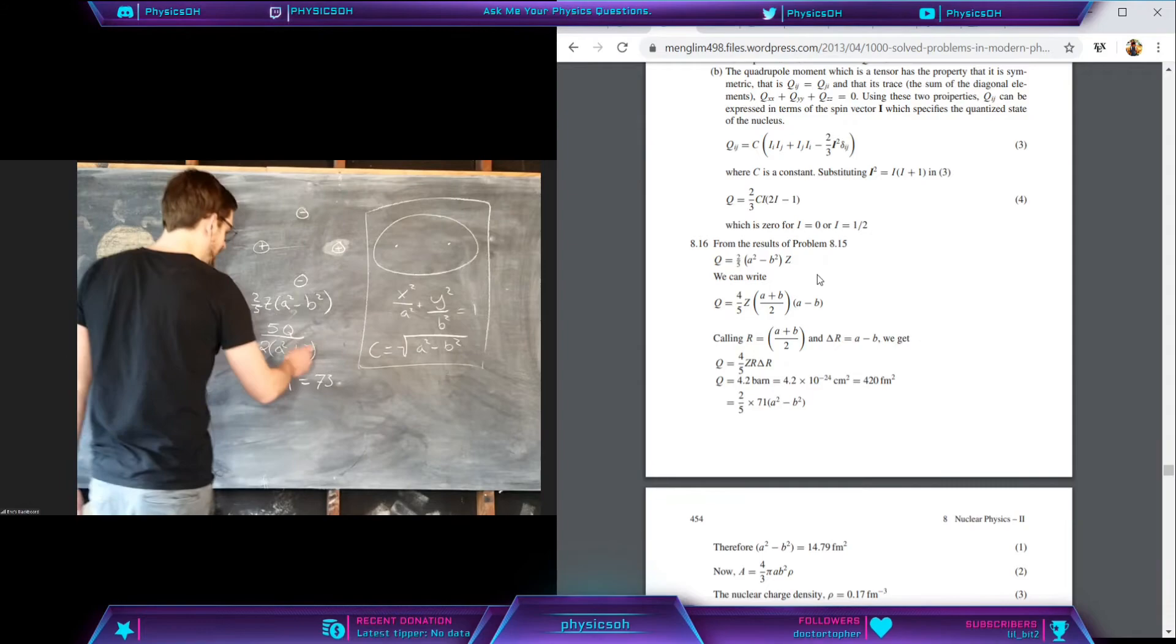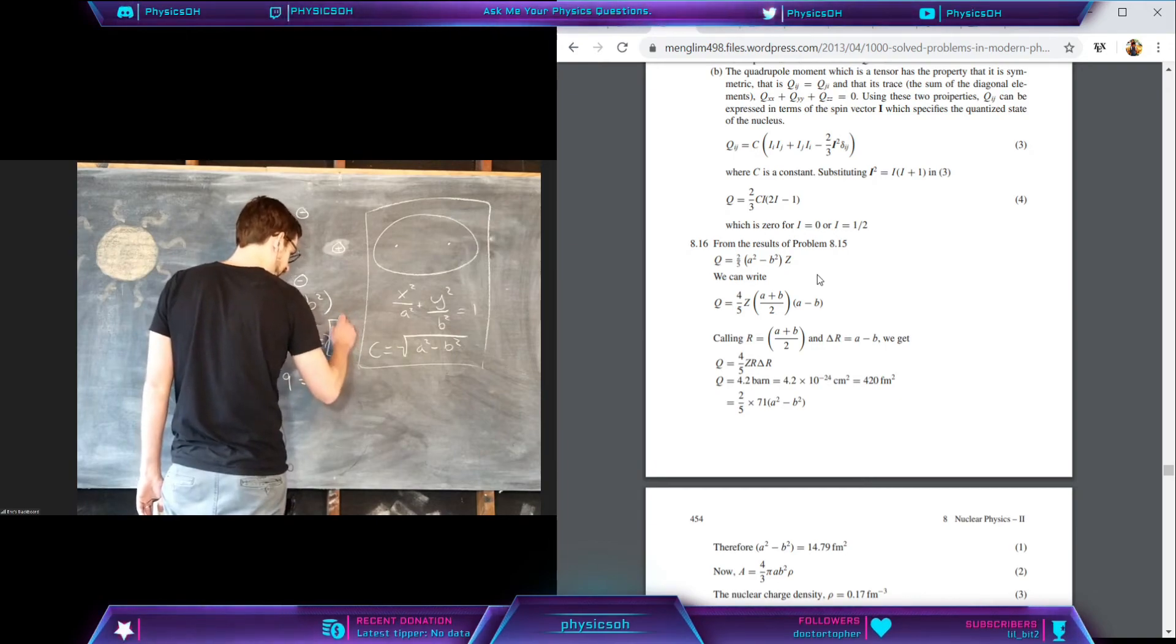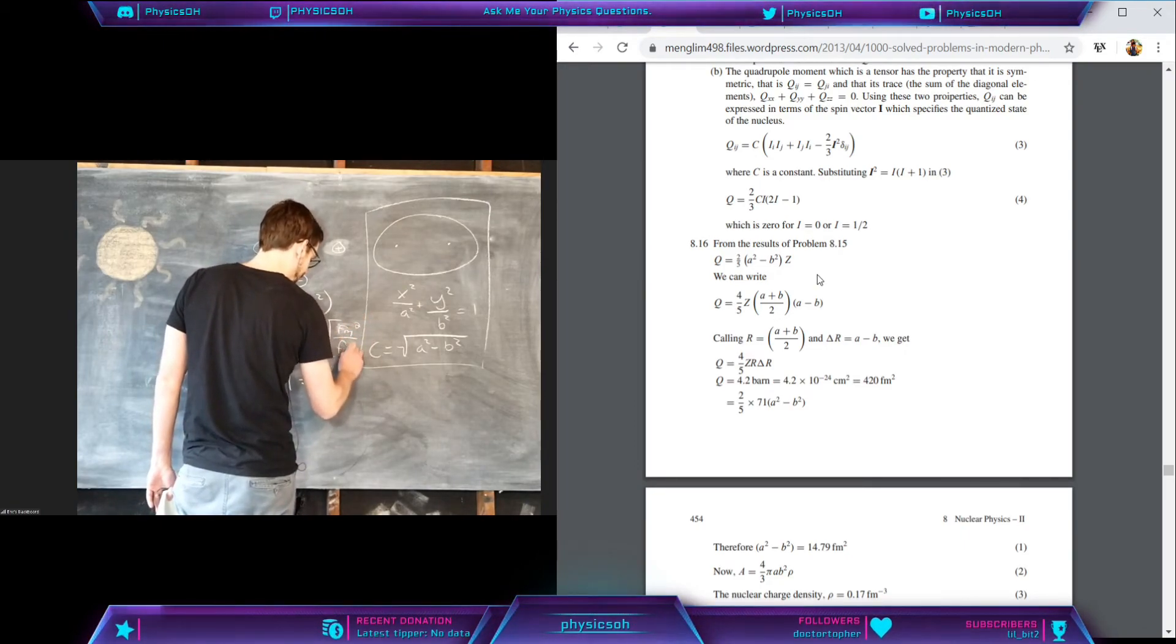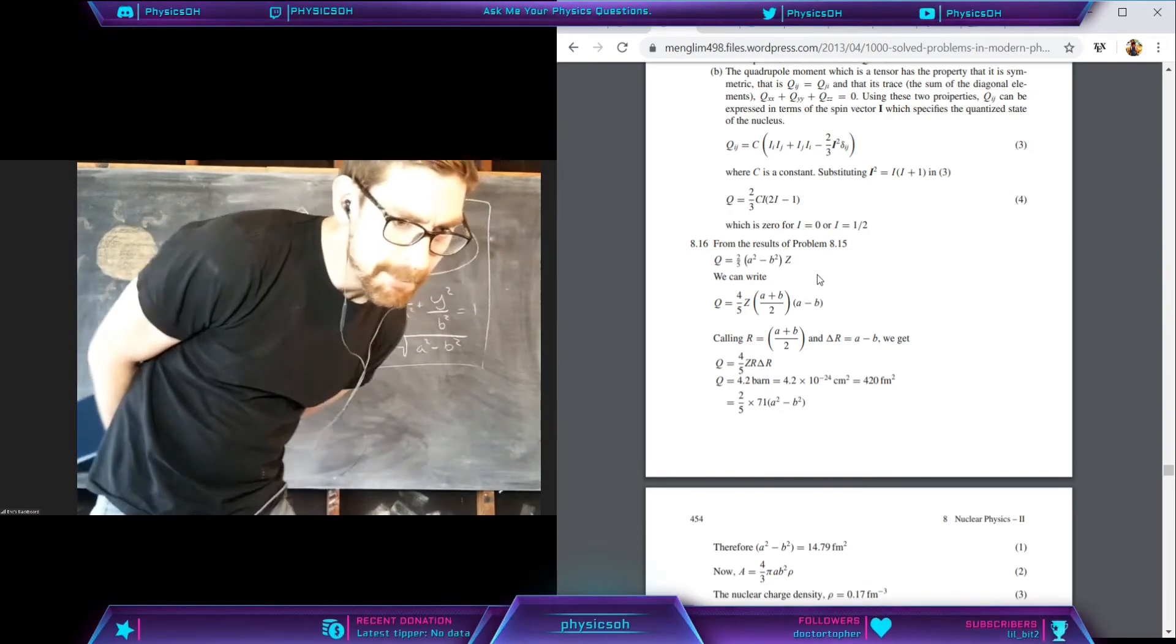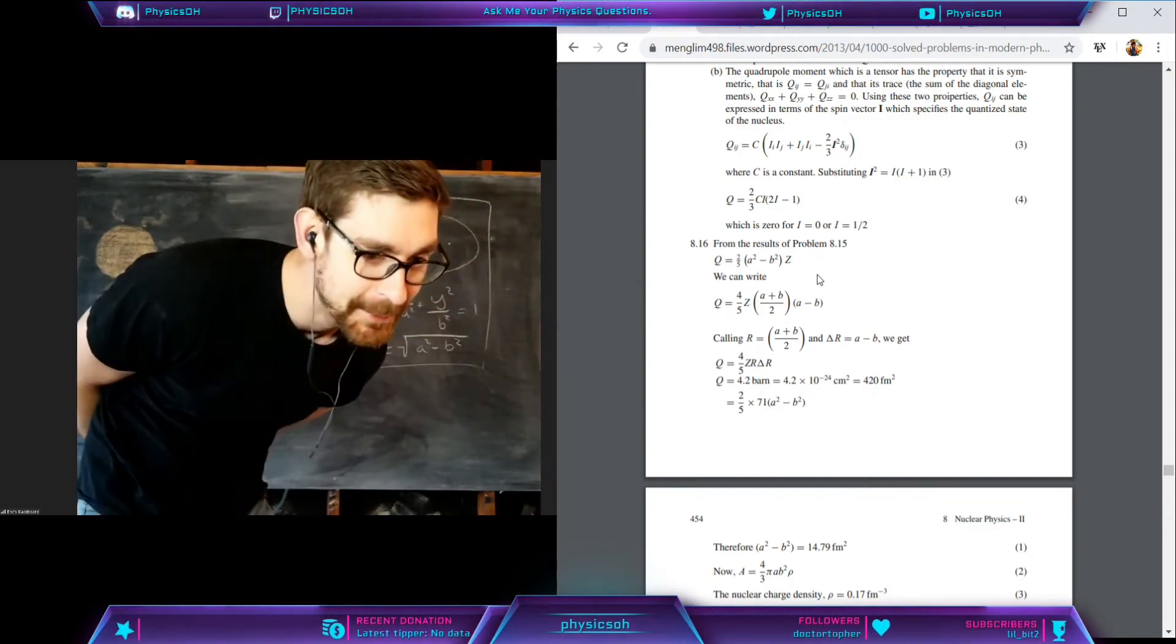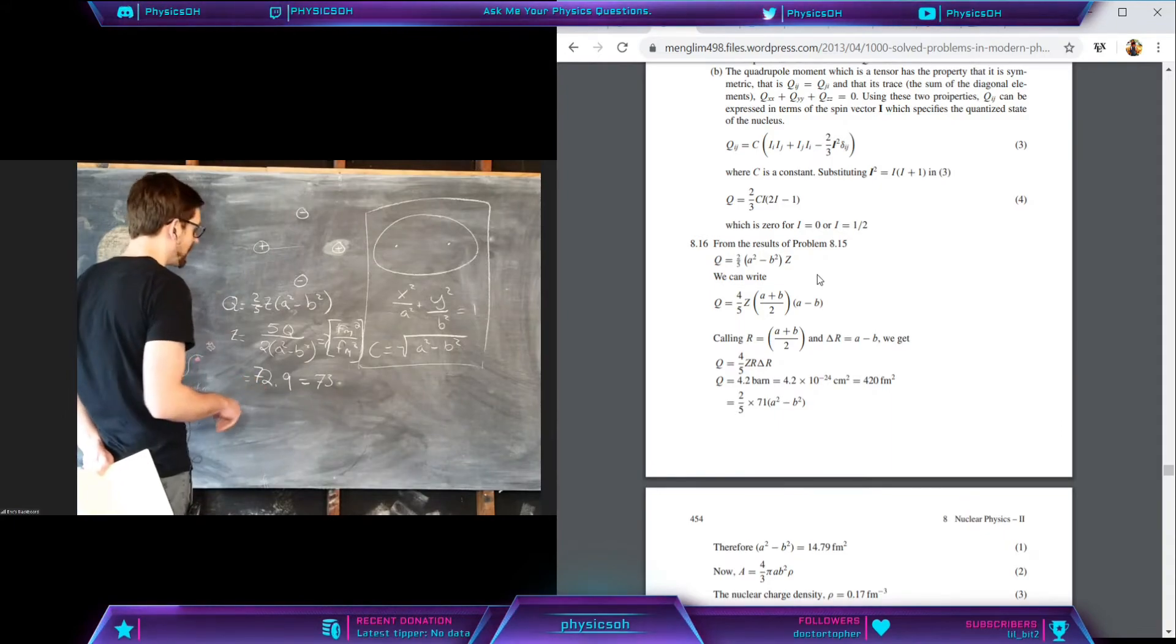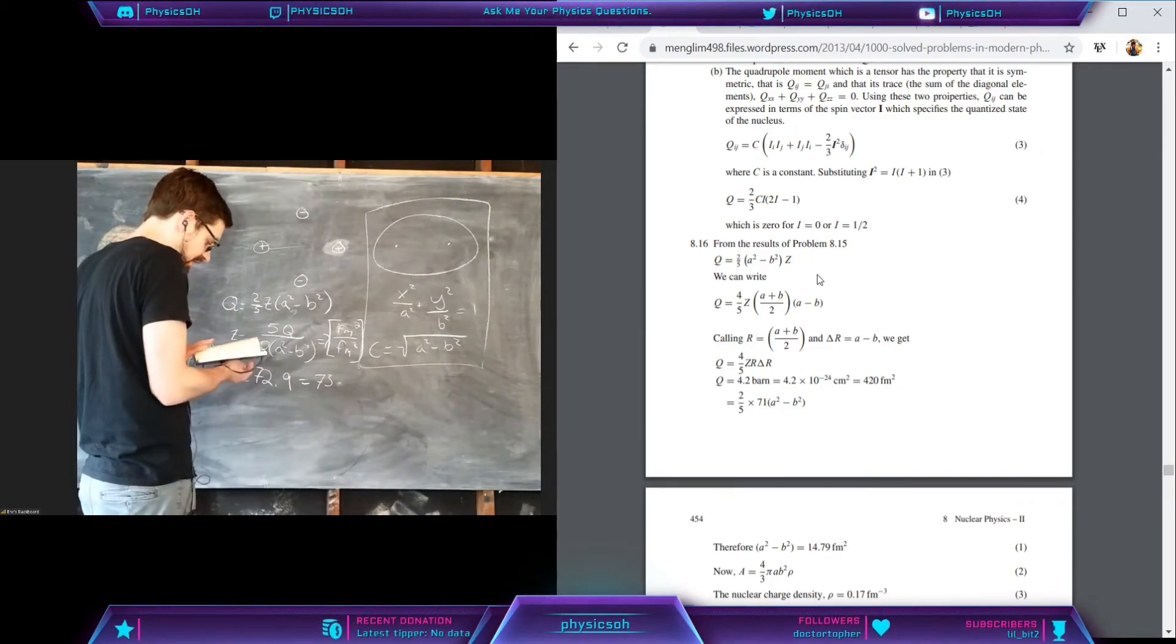It has units of femtometers squared over femtometers squared, so they cancel away. So anyway, this is Z, this is the atomic number. For our nuclei, Z is 73 and that's the atomic number.